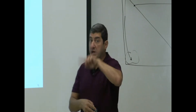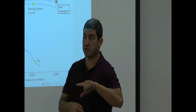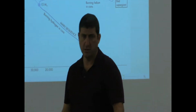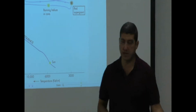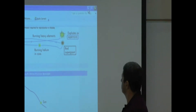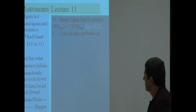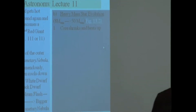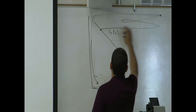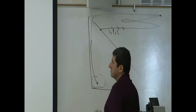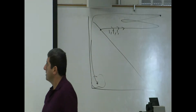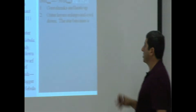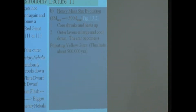This whole process takes much faster for the heavy star. The heavy star forms quicker, it lives much shorter, and it dies very fast. So the core of the star shrinks as it's going this way. It heats up, the outer layers enlarge and cool down, and the star becomes a pulsating yellow giant.